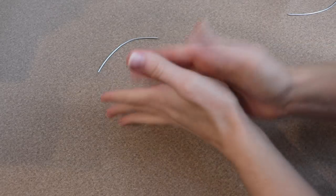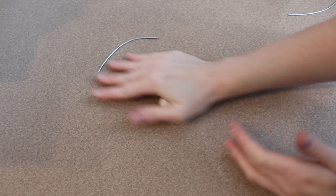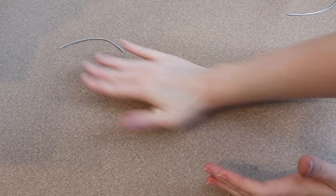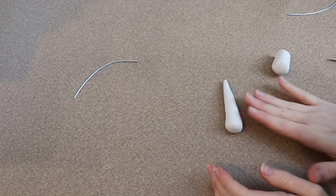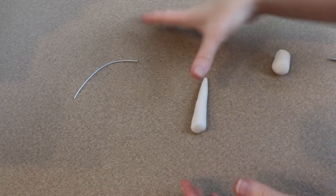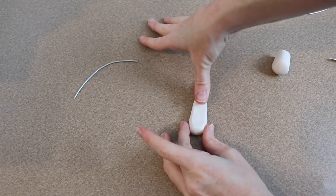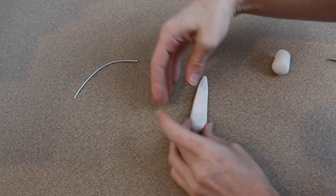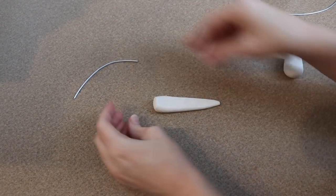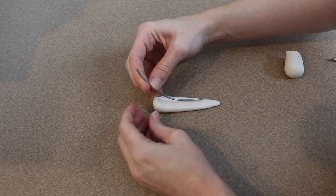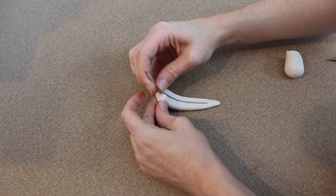I'm going to sculpt the original claw that all the other claws are going to be based off of. I'm going to take a piece of wire and apply some clay over it. I'm going to work the clay until I have the shape that I like. You don't need to worry about textures or anything like that because right now we want a nice smooth surface to make the mold with.